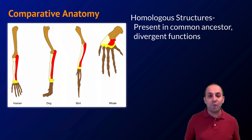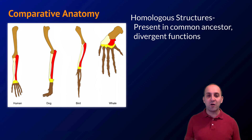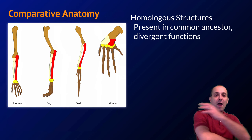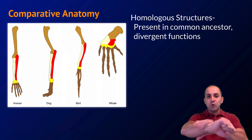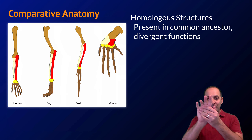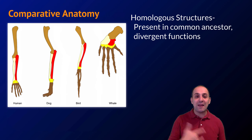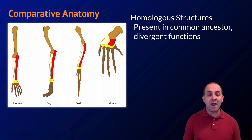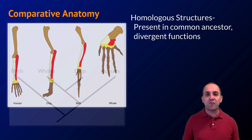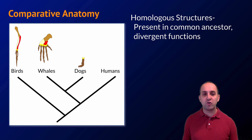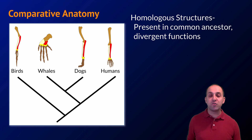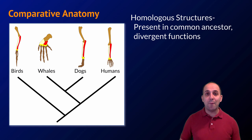This image shows the forelimb of four different tetrapods: humans, dogs, birds, and whales. In each case they have the same overall plan — one bone, then two bones, then a bunch of small bones, then a number of fingers. You can see that in each of these animals that underlying structure has been adapted for the different niches they fill in their environment. But that underlying structure is powerful evidence to support the notion that all of these organisms share an evolutionary common ancestor.